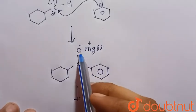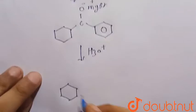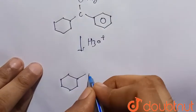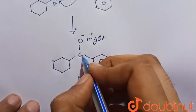So O minus will extract H+ from H3O+, so there is the formation of CO, there should be H.